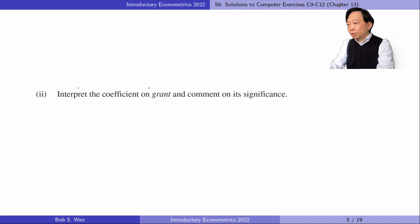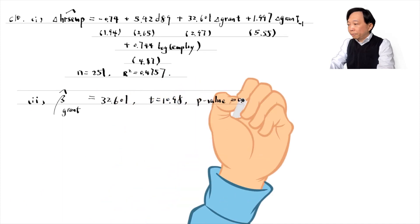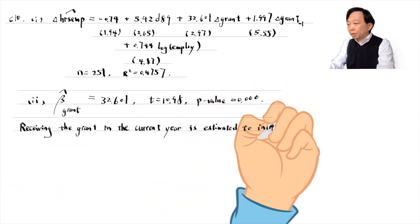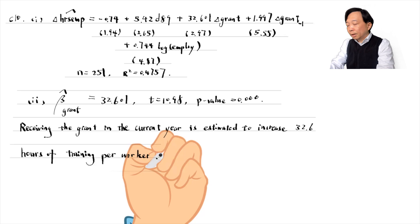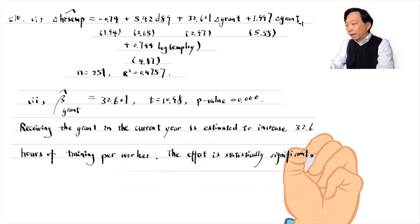In part 2, we interpret the coefficient on grant and comment on its significance. Receiving the grant in the current year is estimated to increase 32.6 hours of training per worker. The effect is statistically significant because the p-value is 0 to 3 decimal places.